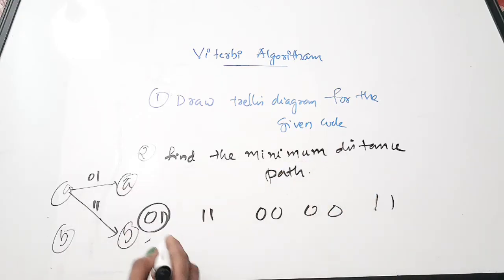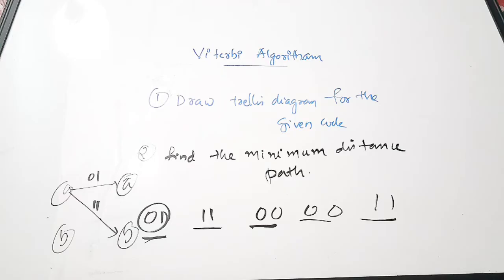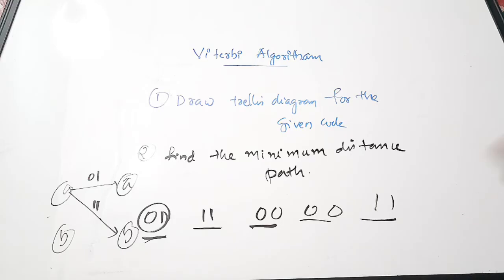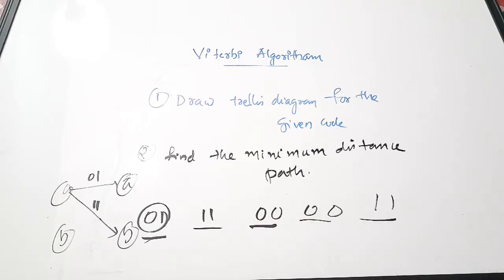Your received code word is 0 1 1 1 0 0 0 0 1 1, and you have to form a Trellis diagram with 5 levels. If your Trellis diagram only has 4 levels, repeat one more level by extending it — whatever you drew in the fourth level, draw again in the fifth level. Then find the minimum distance path covering all five levels, and hence you can decode your code word. This is the Viterbi algorithm statement, also called Viterbi decoding.